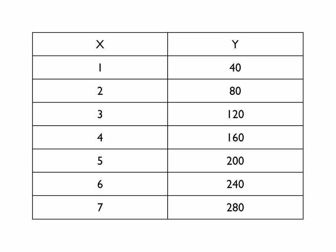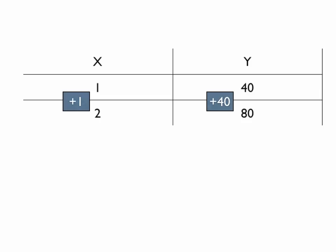And to figure out the rate of change, all you do is you take two of them, and you figure out the difference. The difference between two, from 1 to 2 is positive 1. The difference from 40 to 80 is positive 40. That's the difference.